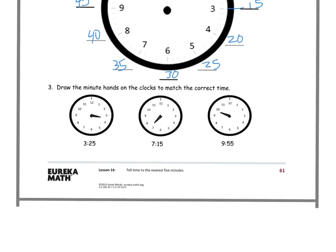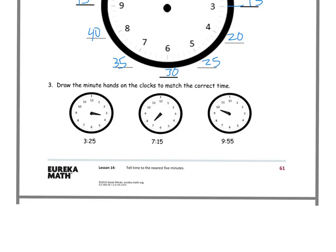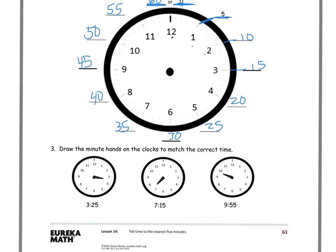So we have our clock filled in, now we can start drawing some minute hands in on the clocks to match the correct time. So we can use this clock up above to help us. So I'll do one of these, and we have the hour hands in, and it says 3:25. So I want to look on my big clock up above and find where 25 is. And I see it's right there, and it's at the 5.